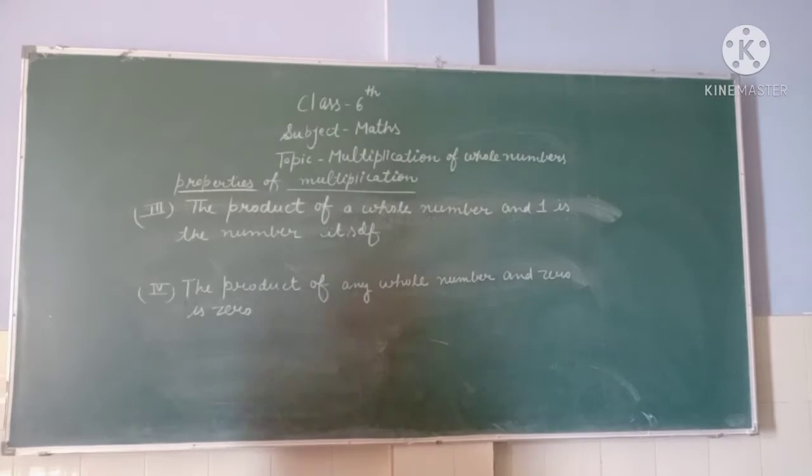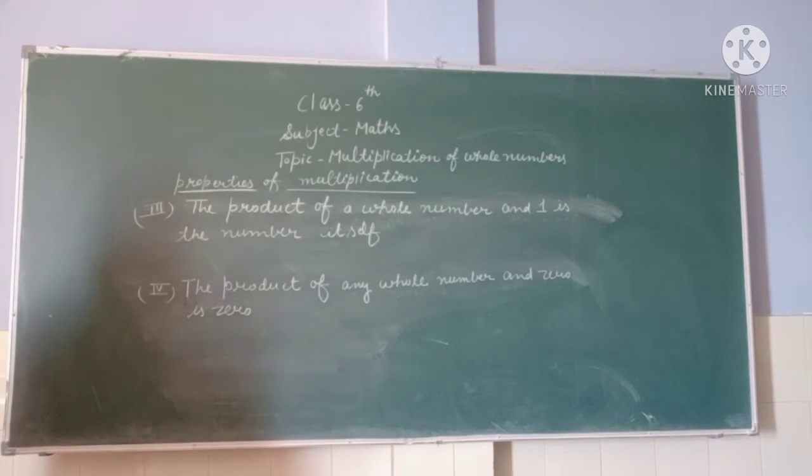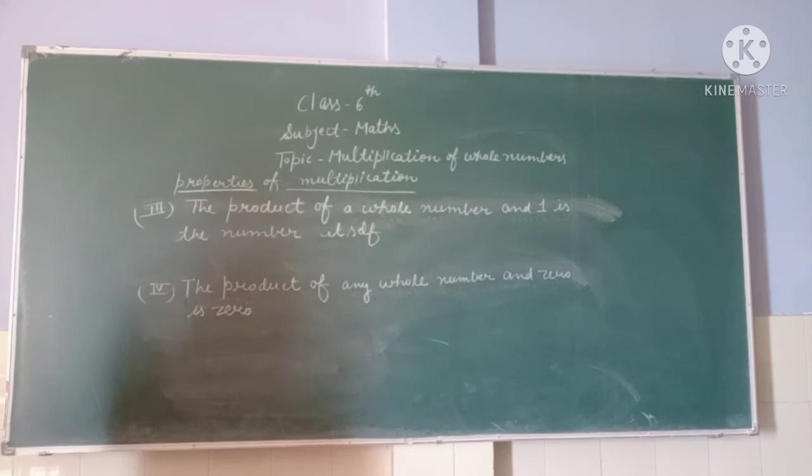The third property is: the product of a whole number and one is the number itself.